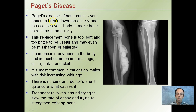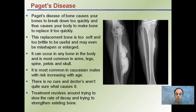Paget's disease is a disease of bone that causes your bones to break down too quickly, causing your body to replace bone too quickly. Bones are breaking down and being rebuilt at too quick a rate. As a result, the replaced bone is very soft and brittle — it's being made too hastily. This can occur in any bone of the body, but is most common in the arms, legs, spine, pelvis, and skull. It's most common in Caucasian males, with risk increasing with age. There is really no cure, and doctors aren't sure what causes it. Treatment revolves around slowing the rate of decay and strengthening existing bone, so that rebuilt bone has proper structure and integrity.